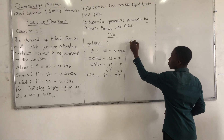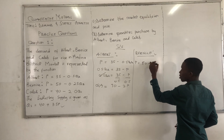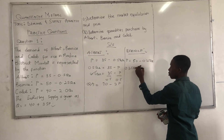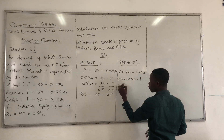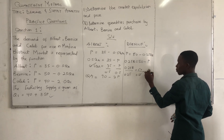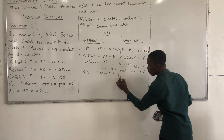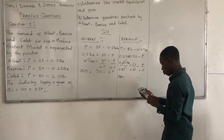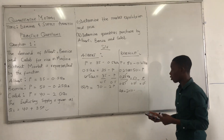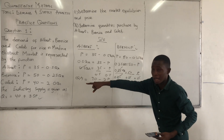We move on to Benis. Benis was given: P equals 50 minus 0.25 QB. We move 0.25 QB to the left-hand side: 0.25 QB equals 50 minus P. We divide both sides by 0.25 to get QB. So QB equals 50 divided by 0.25, which gives 200, minus 1 divided by 0.25 times P, which gives 4P. So QB equals 200 minus 4P. That's the actual quantity function for Benis.